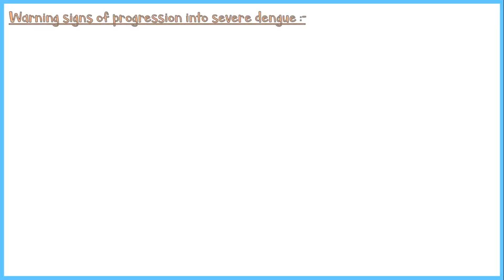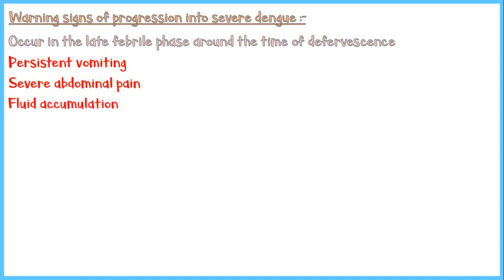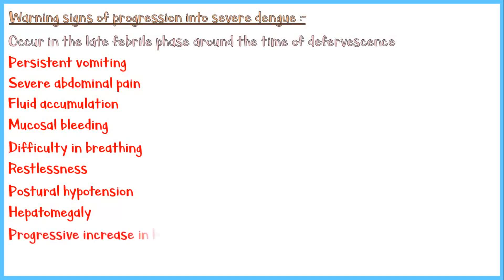These warning signs begin to appear around the time of defervescence and include: persistent vomiting, severe abdominal pain, fluid accumulation in pleural and peritoneal cavities, mucosal bleeding, difficulty in breathing, restlessness, postural hypotension, hepatomegaly, and progressive increase in hematocrit due to hemoconcentration. Clinicians should always monitor patients with dengue for these warning signs and provide appropriate supportive care to reduce the risk of developing hypovolemic shock.